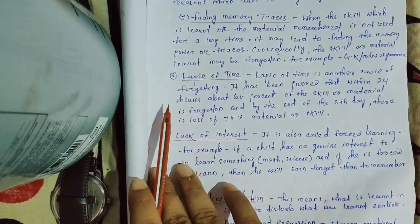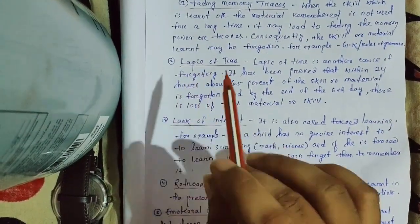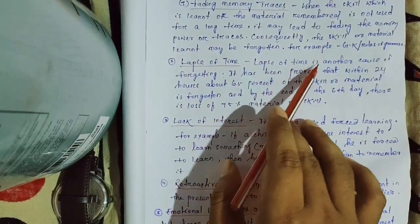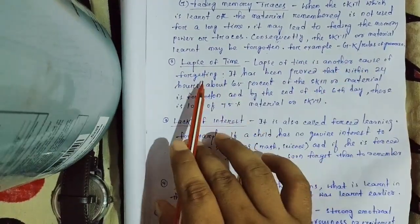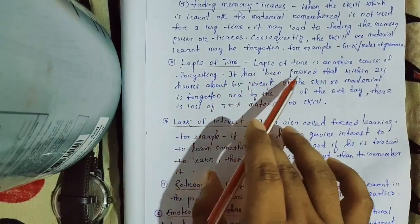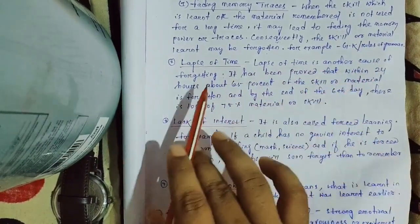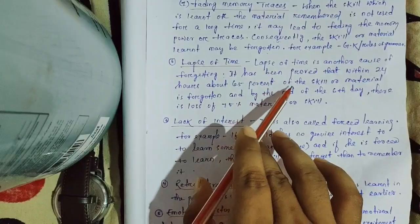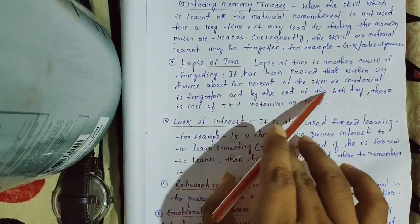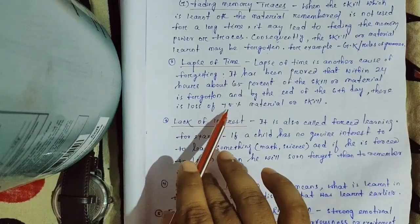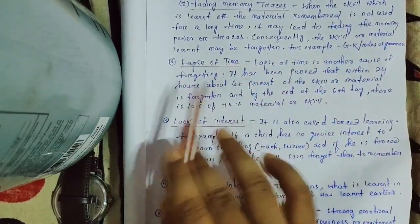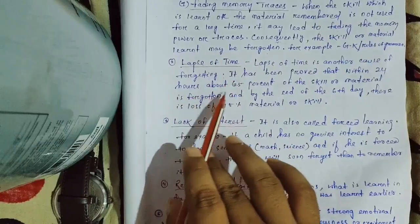Next is lapse of time. Lapse means absence or lack of time. Lapse of time is another cause of forgetting. It has been proved that within 24 hours about 65% of the skill or material is forgotten, and by the end of the sixth day there is a loss of 75% of material or skill.